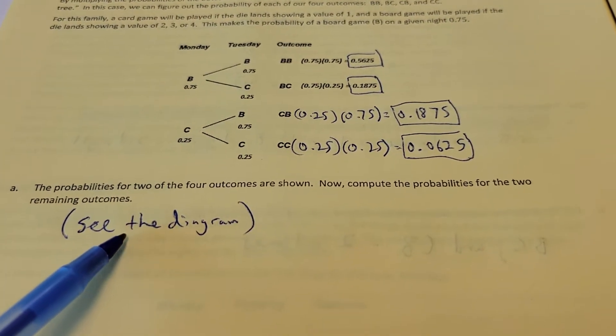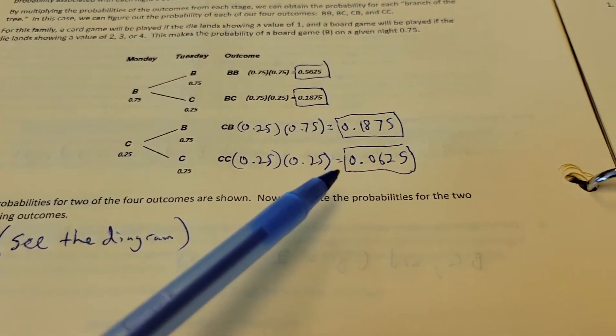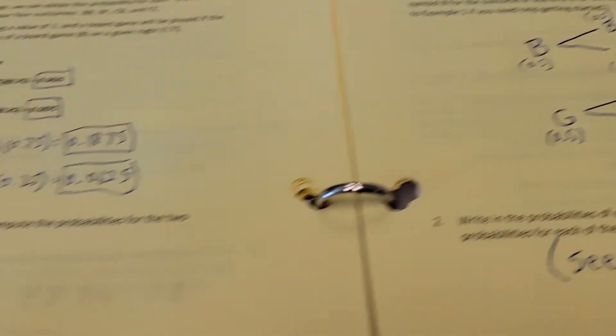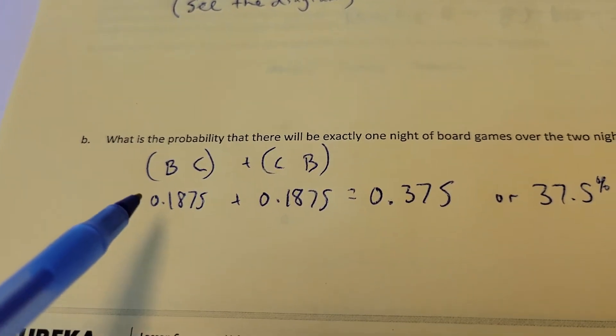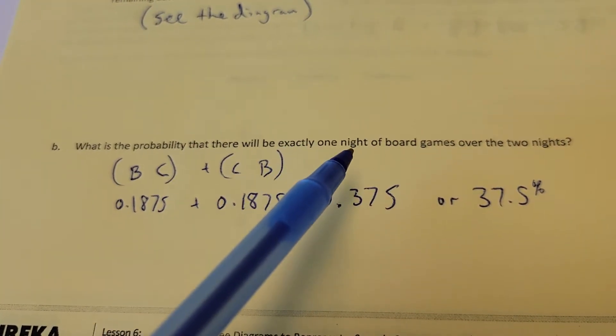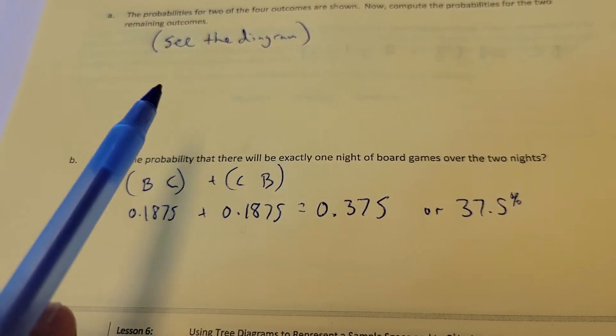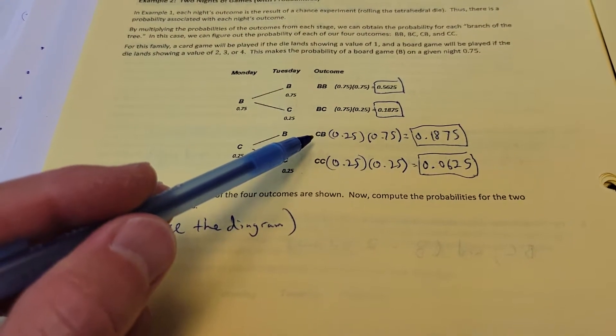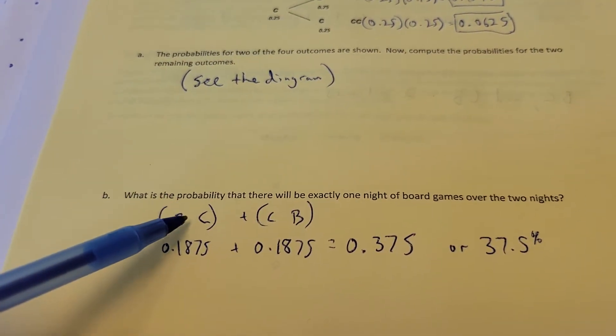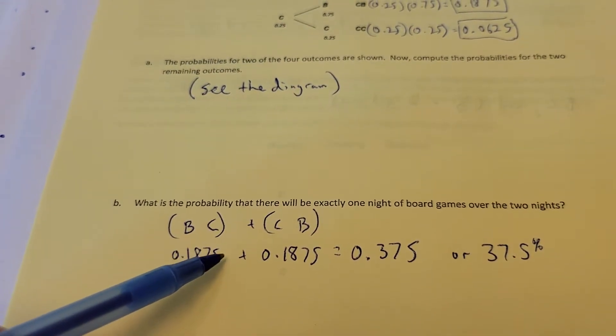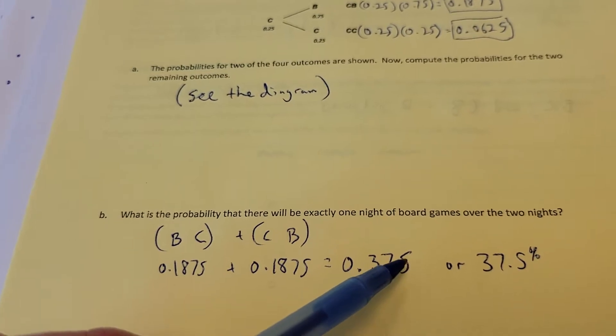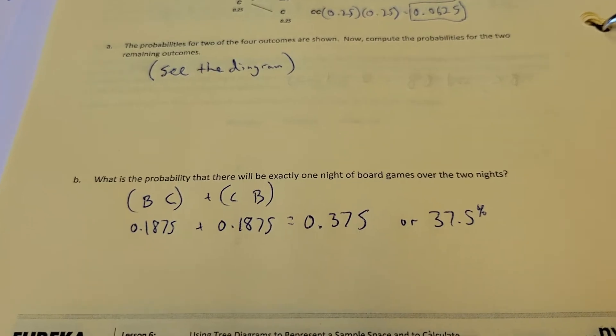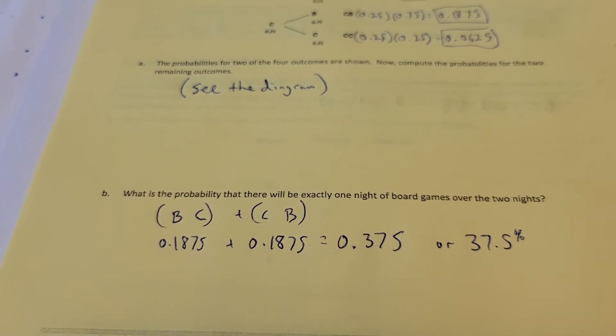We've already figured this out. We've figured out all the probabilities for these events happening. Hold on just a second, one more question here. What's the probability there would be exactly one night of board games over the two nights? Well, if you look at your information here, I've got board game here, board game here. That's a 0.1875, a 0.1875. Add them together at the end and I've got 0.375 or 37.5% chance they're going to have at least one of those board games there.